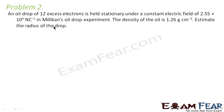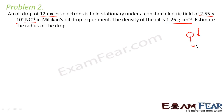Problem 2 states: an oil drop with 12 excess electrons is held stationary under a constant electric field of 2.55 into 10 to the power 4 newton per coulomb in Millikan's oil drop experiment. The density of the oil is 1.26 gram per centimeter cube. Estimate the radius of the drop. The oil drop has excess electrons, so it behaves like a negatively charged particle, and we set up the electric field direction accordingly.